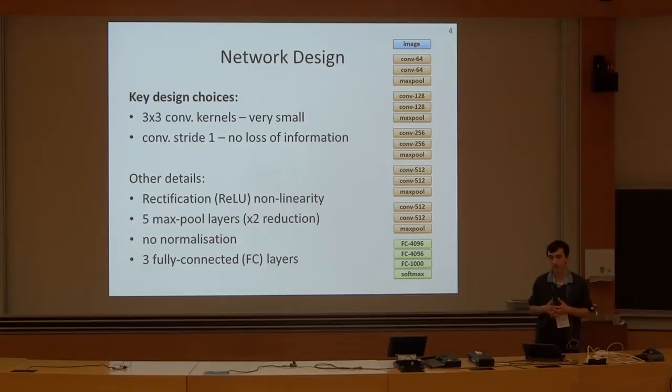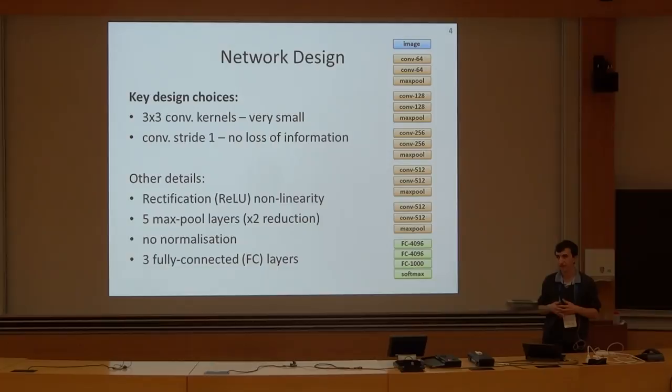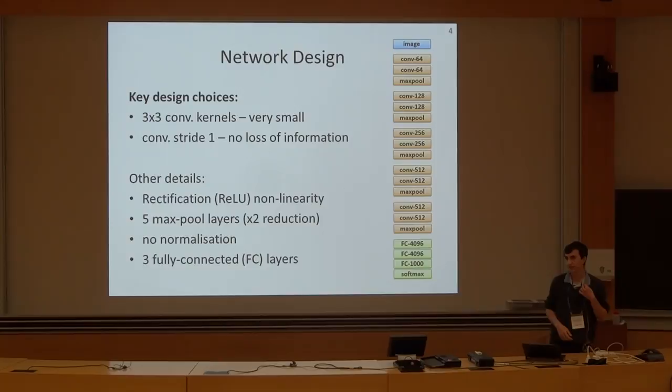The key design choices we made are the use of very small 3x3 convolutional filters and a very small 1-pixel stride. This is a departure from the best-performing architectures of last year's ImageNet competition, where top-performing entries used larger convolutional filters in the first layers and had to use larger strides. In our case, we use the same 3x3 convolution throughout the whole network.